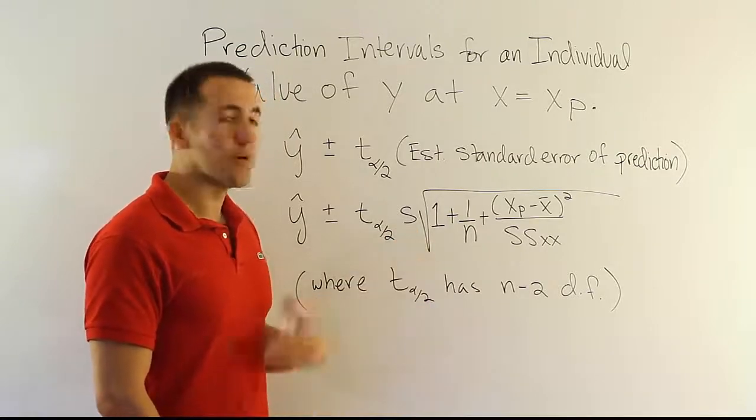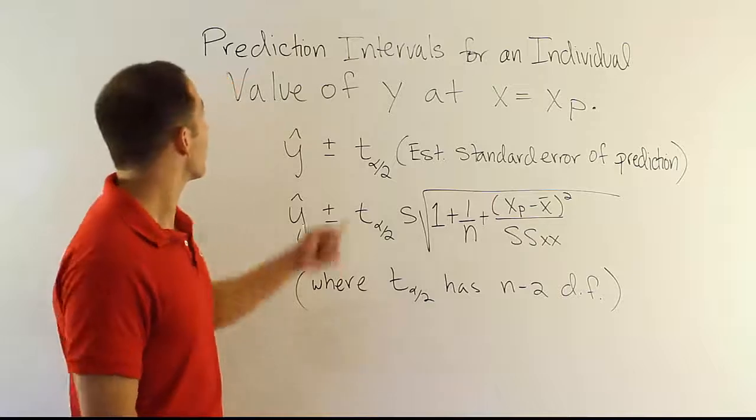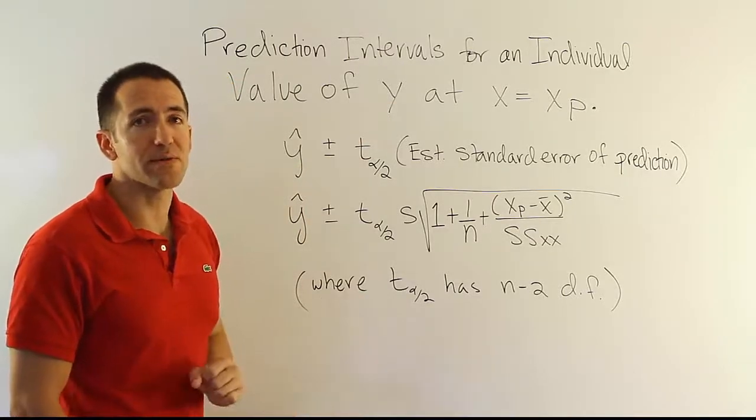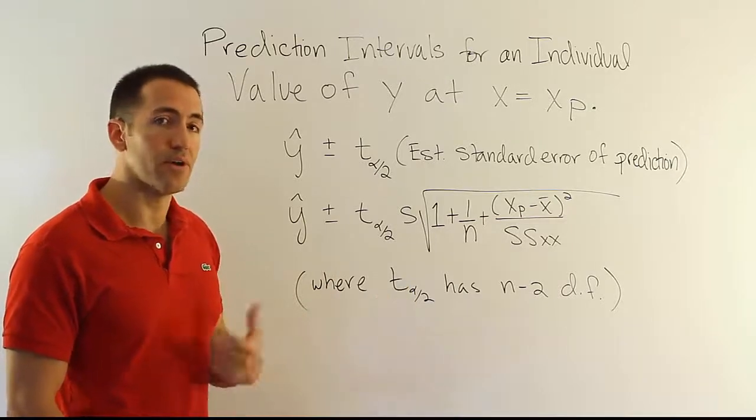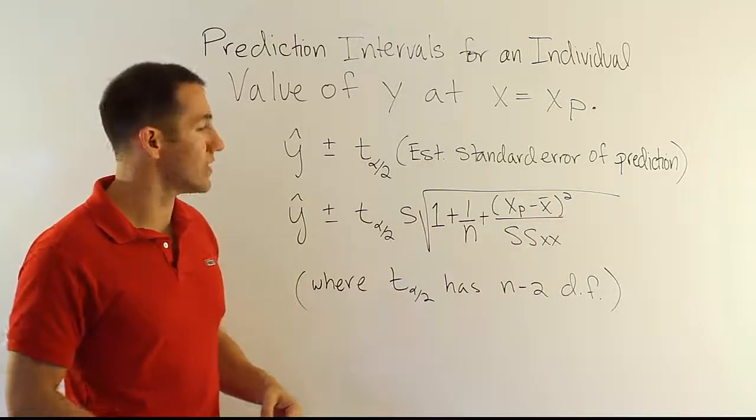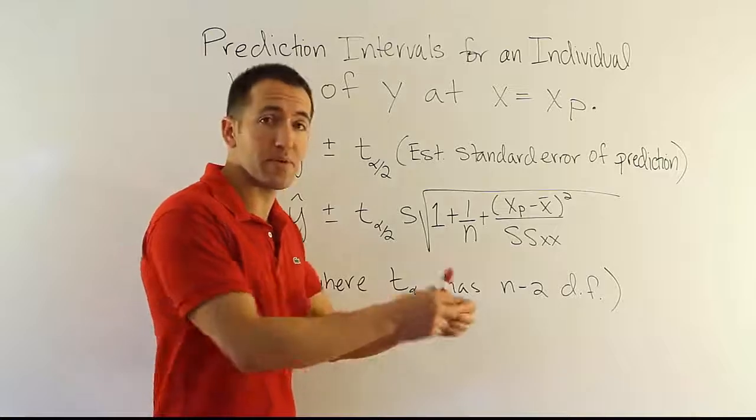That means you're always going to have wider intervals when you're dealing with a prediction interval for an individual. And this should make sense. It's going to be far easier to predict the average value for women who wear a shoe size of 6 than it would be to predict for a specific woman.